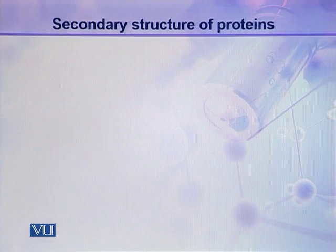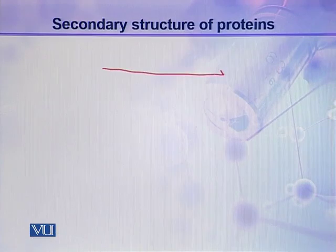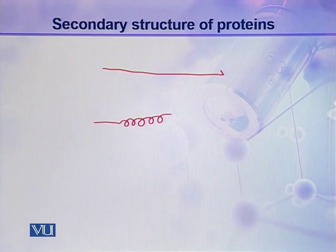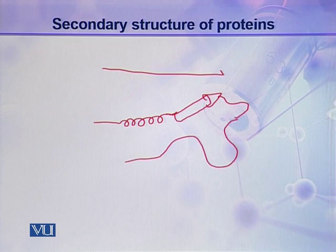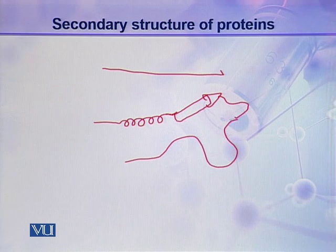For example, here you can see this is a polypeptide chain — it contains a number of amino acids. It is a fully extended polypeptide chain and it can make a coil or helix, it can make a sheet, it can make a turn, or it can make a loop. All these changes are local conformational changes and are called secondary structures of proteins.